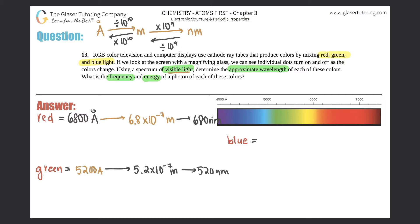Now for blue. The spectrum goes up by 200s, so: 4000, 4200, 4400 angstroms — that looks like a good blue. So 4400 angstroms. Using the same calculations, that gives us 4.4 times 10 to the negative 7th meters, which is the same as 440 nanometers.